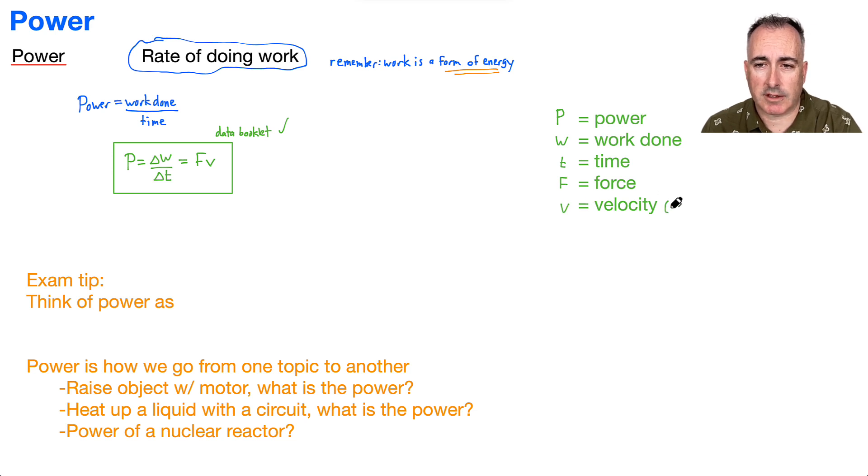Now the units for velocity are pretty easy. It's just meters per second. Force is easy. It's newtons. Time is easy. It's seconds.